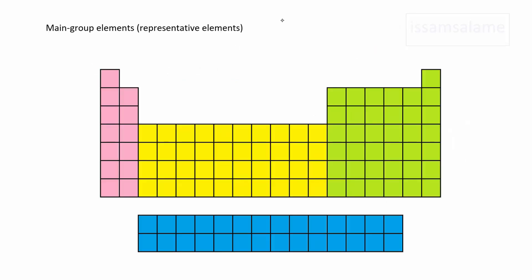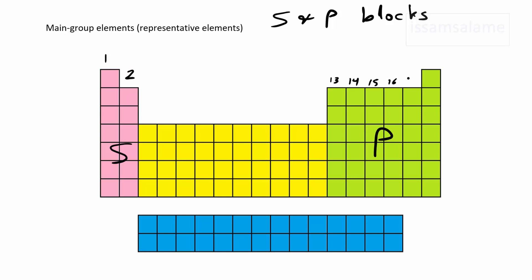Now let's talk about the second objective, which is the main group elements, or as we call them in some books, representative elements. The main group elements are the S and the P block elements, which are groups 1 and 2 and groups 13 to 18. These groups, we call them the main group elements, since their groups they share the same number of valence electrons as I'm going to show you in a while.